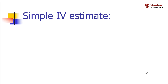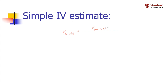The instrumental variable analysis is actually quite straightforward. I'll derive it more carefully in a minute, but I'll give you a simple estimate right now. If I wanted to get the effect of the exposure on the outcome — in that PLOS One paper, they wanted to estimate the effect of alcohol on blood pressure — I can get that by taking the quotient of the effect of the instrument (the genotype) on the outcome (blood pressure), and that's going to be an unconfounded effect.